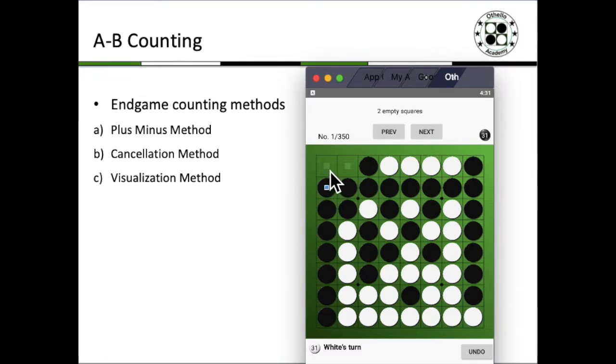You can either choose to play A1 or B1. If I were adopting a plus-minus method, which is probably the most common way to count endgames, first you would count all the discs that you have. Right now it's White's turn to play.